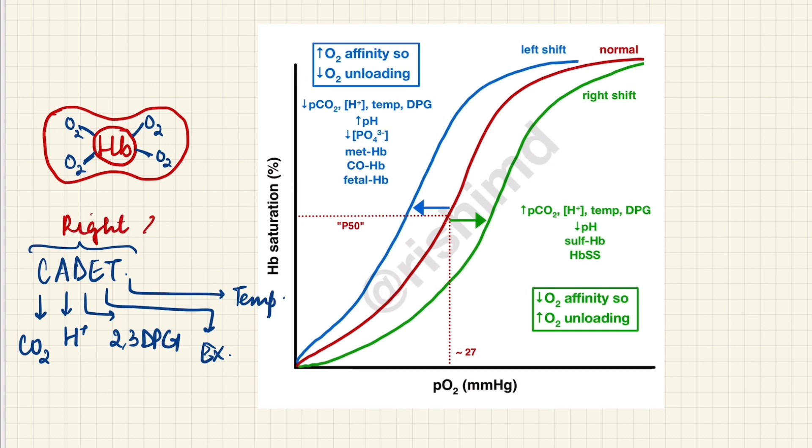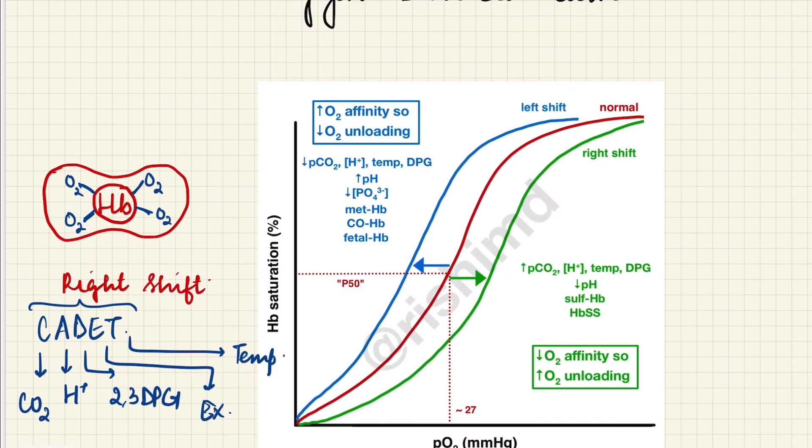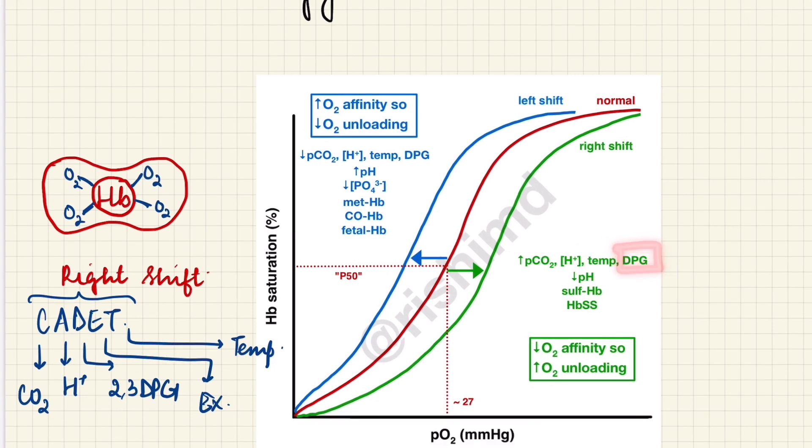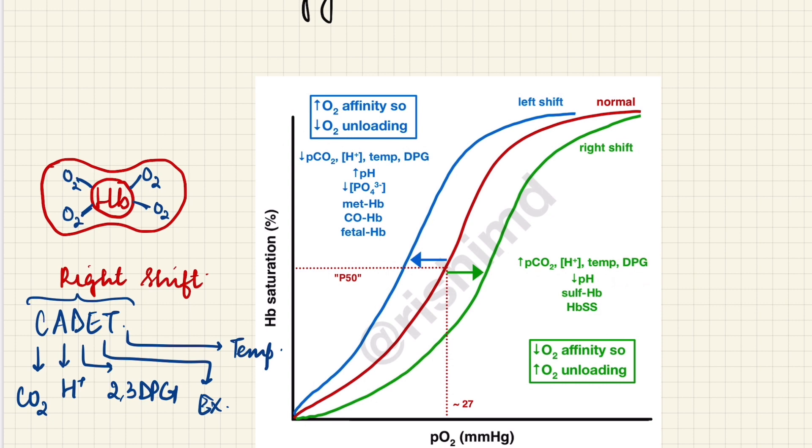If I increase the CO2 concentration, if I increase the acid or H+ concentration, if I increase the temperature, if I increase the 2,3-DPG—2,3-DPG is an anionic molecule inside the RBCs which helps in dissociation of oxygen and association of CO2 with the hemoglobin—all of this will decrease the oxygen binding to the hemoglobin.